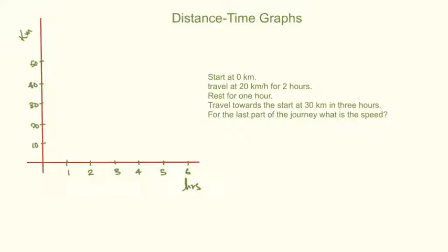This time what we're going to do is we're going to plot the graphs. You can see we're going to start here — I should label this as my point of zero and this is my starting point. What we're going to do is read the information bit by bit and then plot it as we go along. The first bit of information says that we should start at zero kilometers.